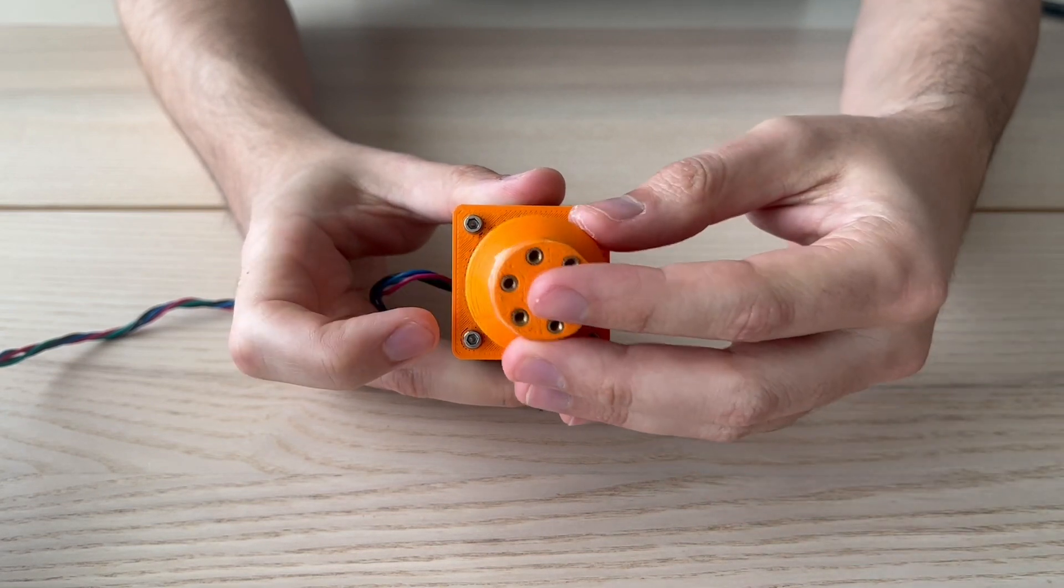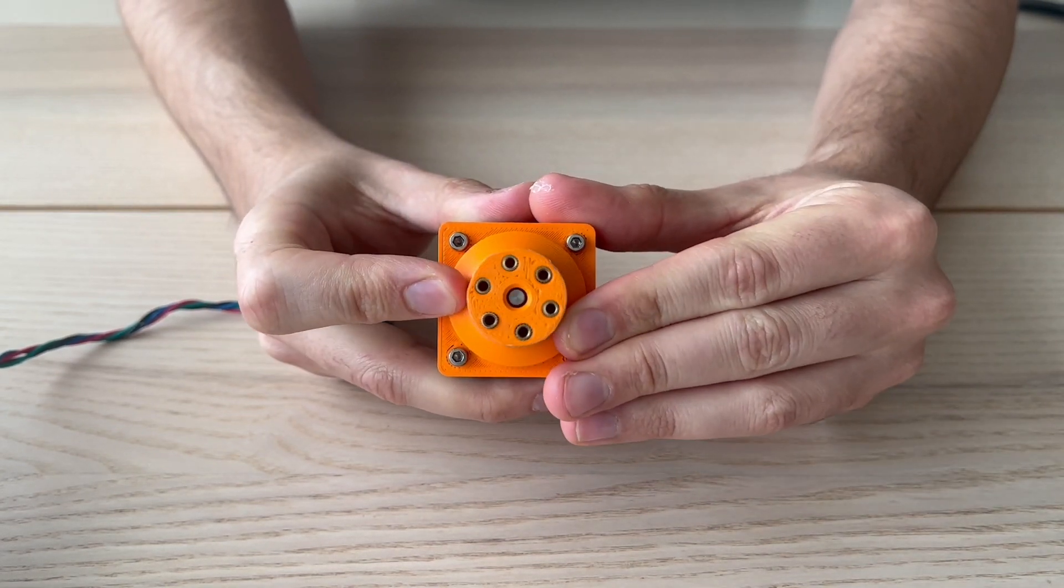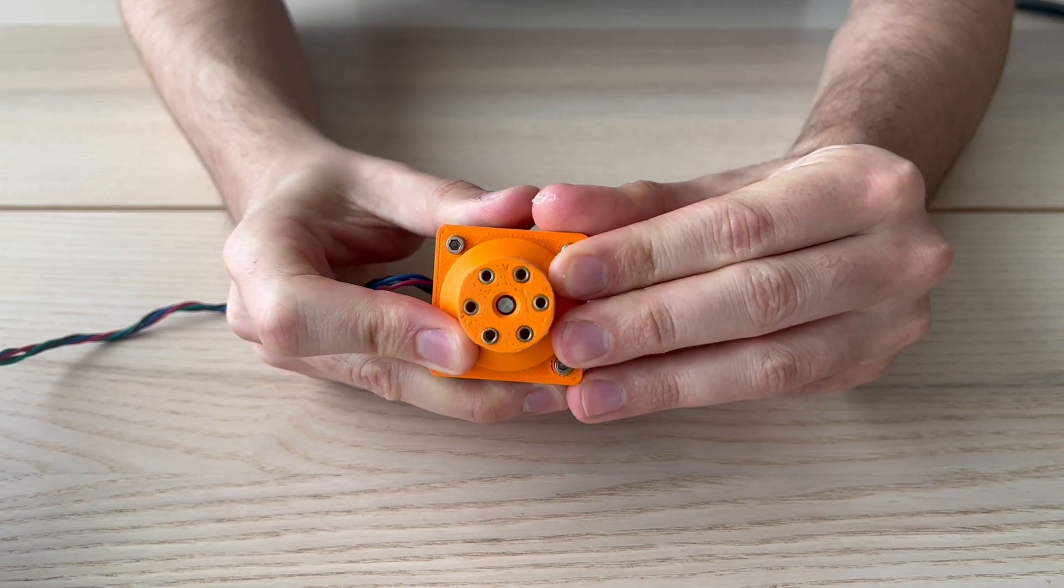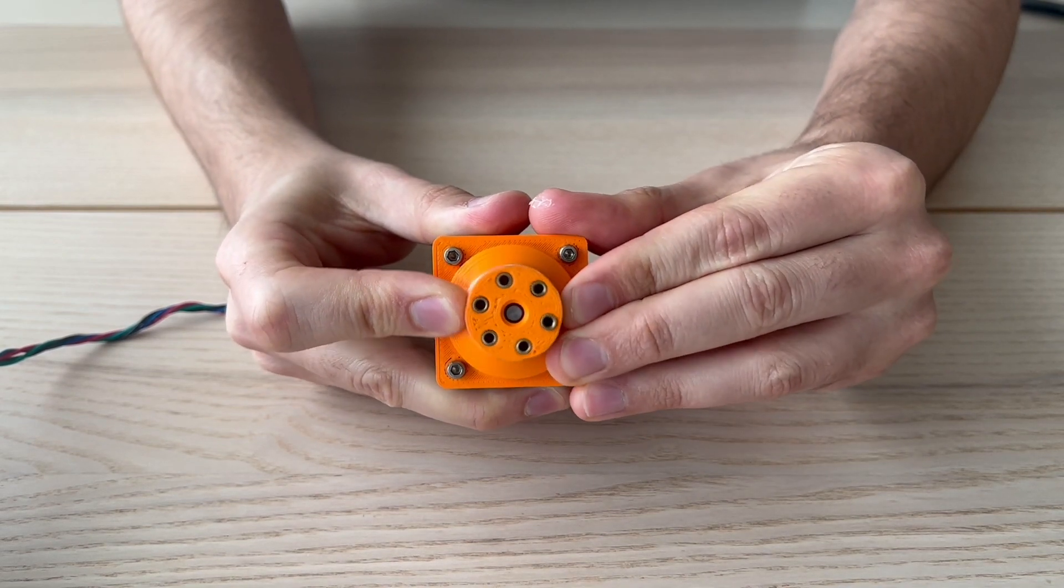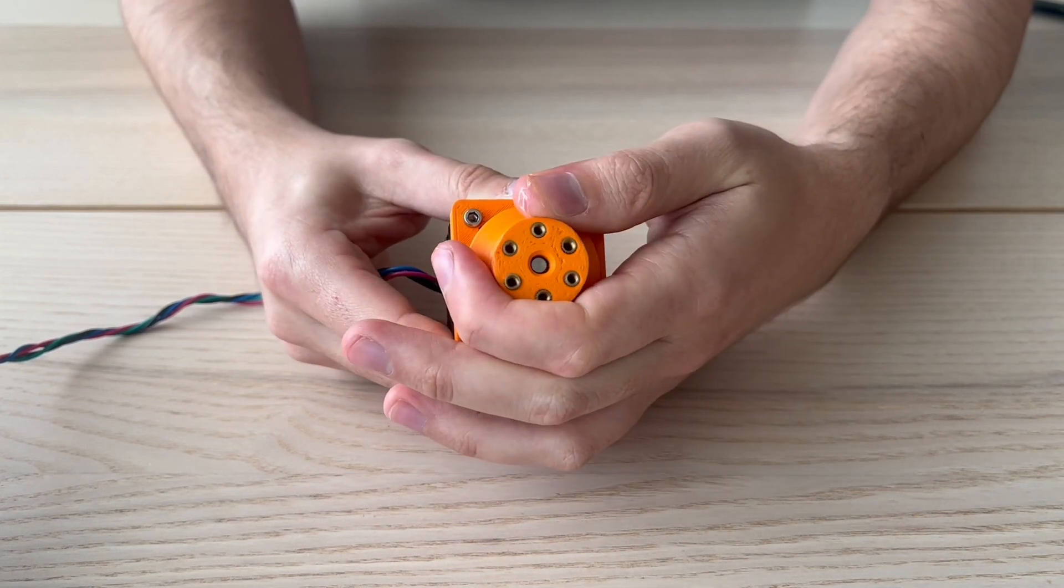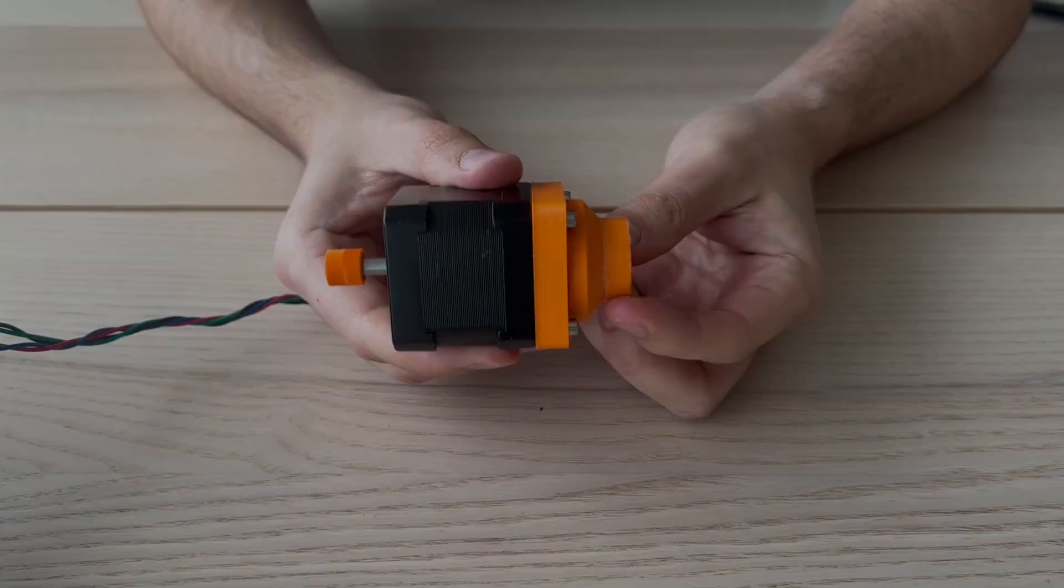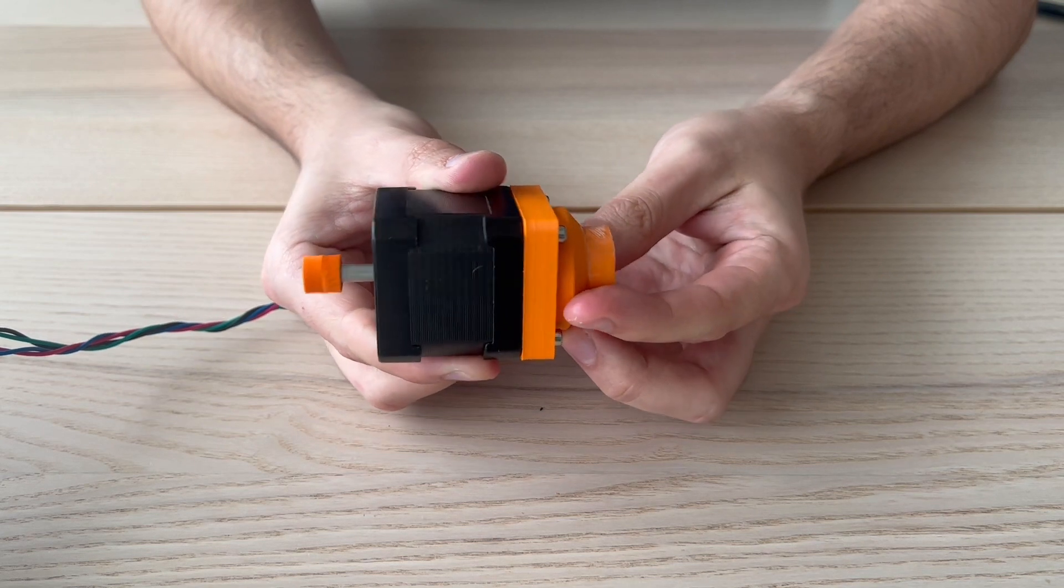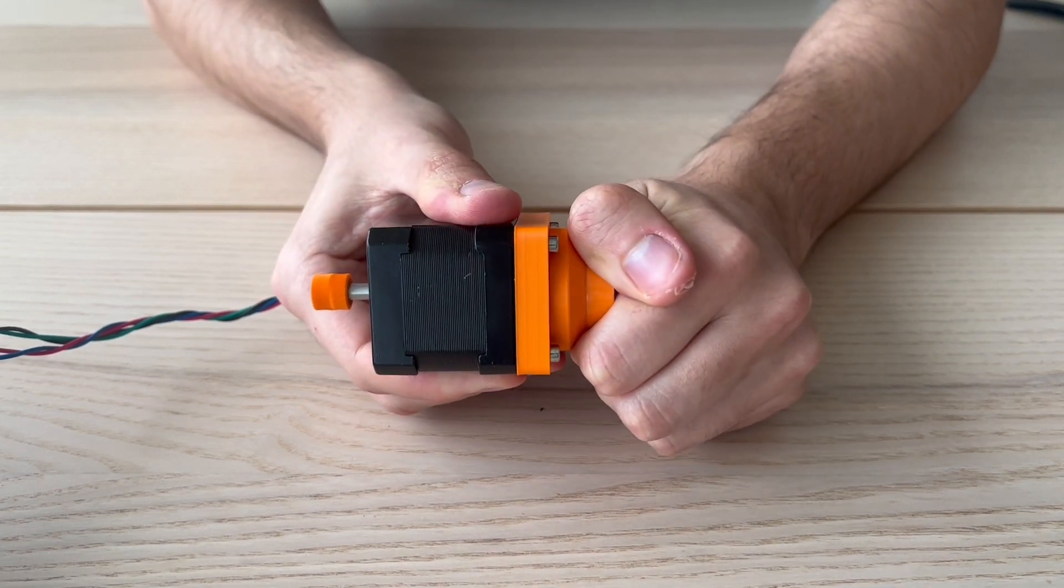Now let's add the circular spline and run again the test. Despite the movement is done due to these two extra teeth, the rotation is quite clean. Let's try to stop the axis. Since ratio is 30 times stronger, it's hard to stop it.